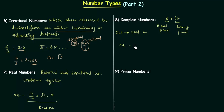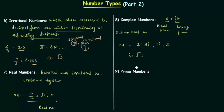Some examples of complex numbers are 2 plus 3i, 3i, and 2i. This i we call iota, and iota is equal to the square root of minus 1. If we square both sides, iota squared equals minus 1.